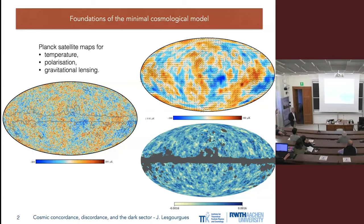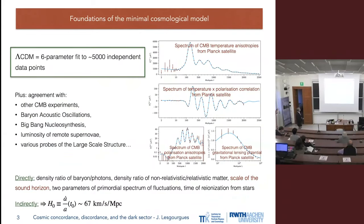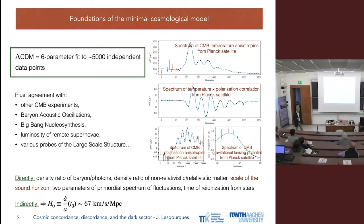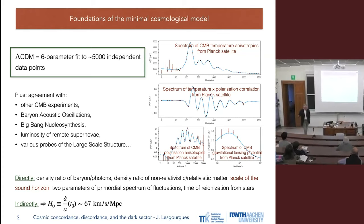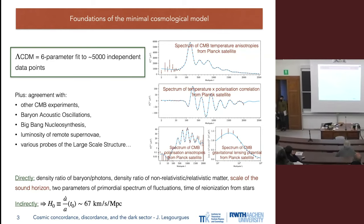When I speak to a non-specialized audience I usually start by stressing that we have a well-established, robust standard cosmological model which relies on many pillars, like observations from the Planck satellite. When we fit our Lambda CDM minimal cosmological model to Planck, we have a very good six-parameter fit to about 5,000 independent points. This best fit is very consistent with a number of other experiments, so we don't want to throw away Lambda CDM all at once.